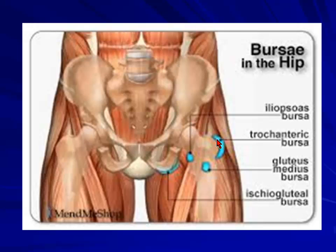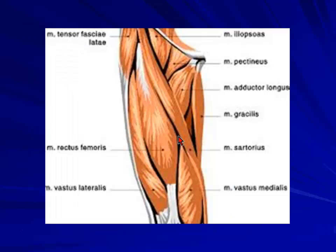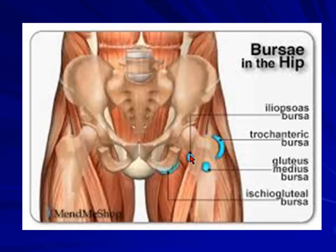Looking at the bursa — you've got the trochanteric bursa, so you need to know where the location is. Posteriorly, it is just below the intertrochanteric line. If you've got uptake posteriorly and it's just abutting the bone, it will be a gluteus medius bursa. If you're looking at the iliopsoas muscle — iliacus coming from origin here, coming down, attaching there — you've got a bursa there. And at the ischium, you've got the tuberosity, and there is a bursa sitting next to the origin of the muscles.